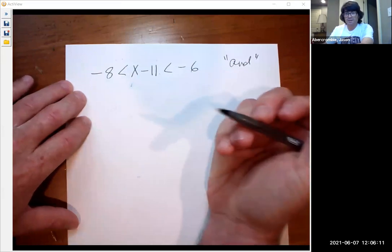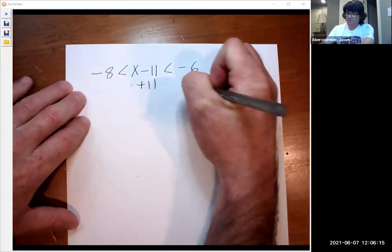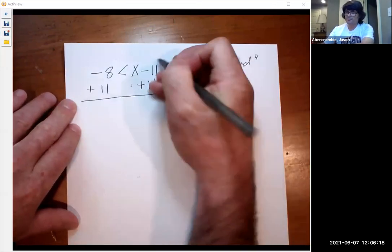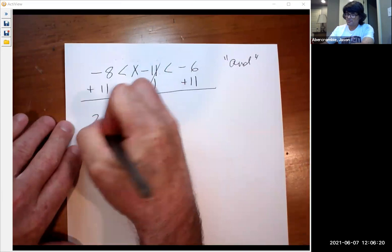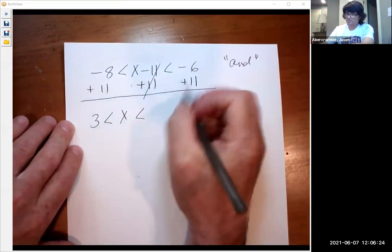The goal here is to still get x by itself, in this case, in the middle. So you add 11 to all three parts, just like that. Then you get 3, you get x, and you get minus 6 plus 11 is 5.